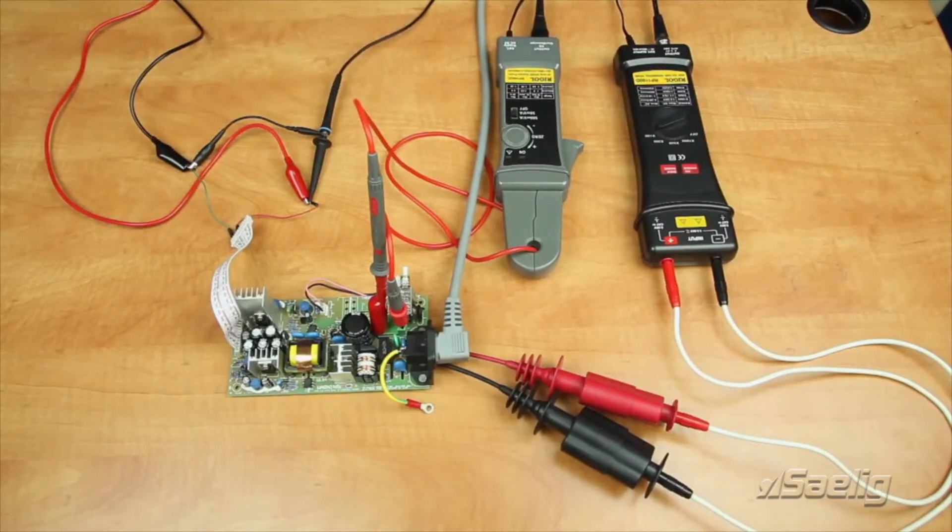And over here on the DC side is where we have our load hooked up and we have our voltage probe for the output ripple measurements. Now let's go to the first test.